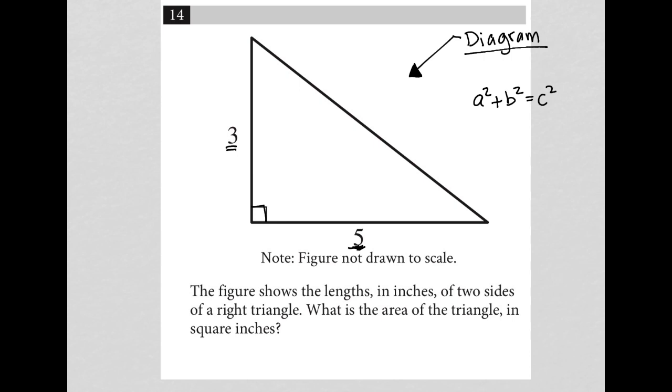I'm not going to find that yet just to make sure I understand what the question is asking for. So let's see what the question is actually asking for. The figure shows the lengths in inches of two sides of a right triangle. What is the area of the triangle in square inches?